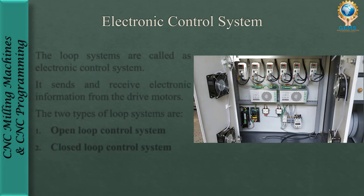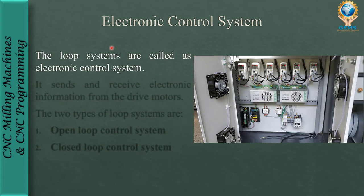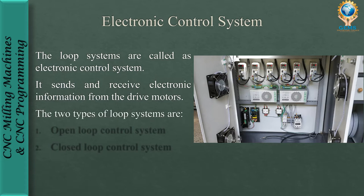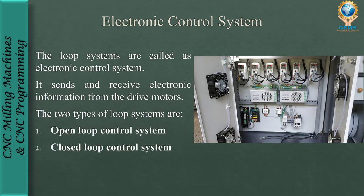What is the electronic control system in a CNC machine? The loop systems are called the electronic control system. It sends and receives electronic information from the drive motors. We need to control the slide movement, the tool movement, and the table movement using servo motors. The two types of loop systems are the open loop control system and the closed loop control system.